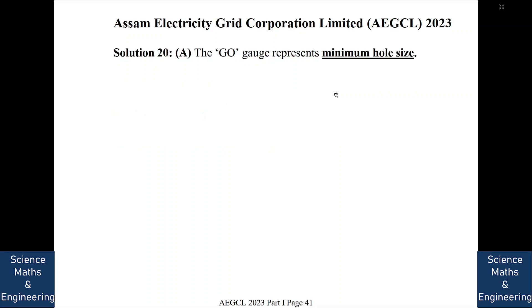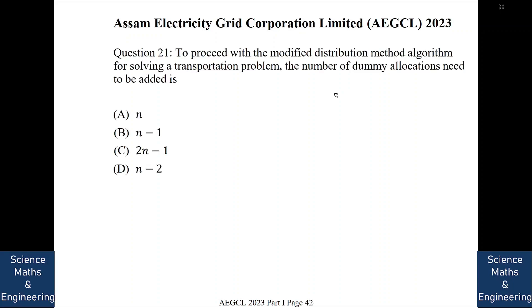To proceed with the modified distribution method algorithm for solving a transportation problem, the number of dummy allocations need to be added is. So the number of dummy allocations needed to be added is N minus 1. Next.